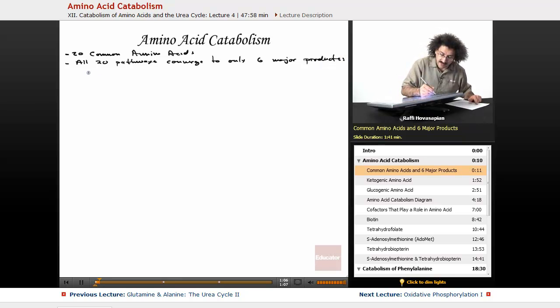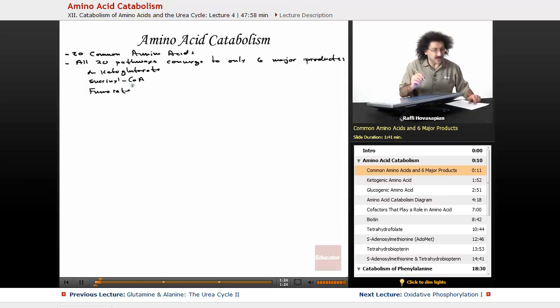So we have alpha-ketoglutarate. We have succinyl-CoA. We have fumarate. And you'll recognize these as citric acid cycle intermediates. We have oxaloacetate.